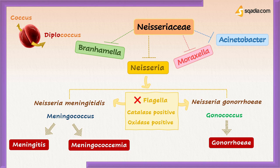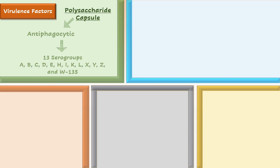Talking about meningococcus, or Neisseria meningitidis, the virulence factors include a polysaccharide capsule surrounding the bacterium, which is antiphagocytic if there are no specific antibodies to coat or opsonize the bacterium. Based on different polysaccharide capsules, N. meningitidis is classified into 13 serogroups: A, B, C, D, E, H, I, K, L, X, Y, Z, and W-135. Among them, meningitis is usually caused by serogroups A, B, and C, often referred to as the major serogroups, while the others are minor.